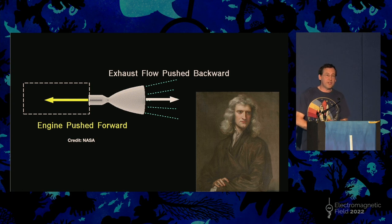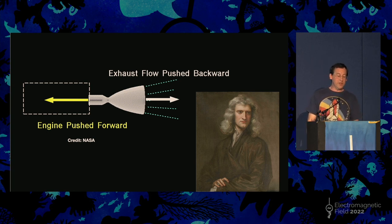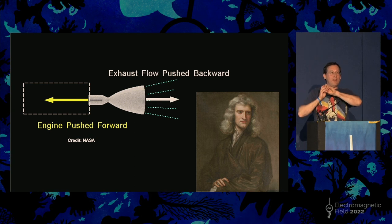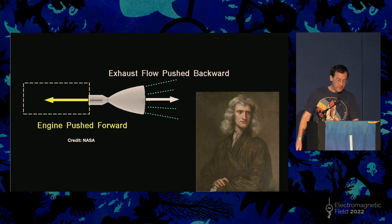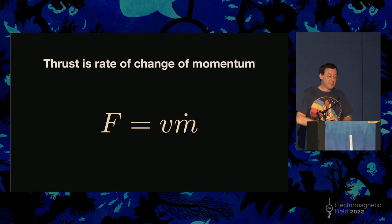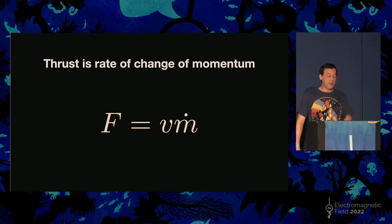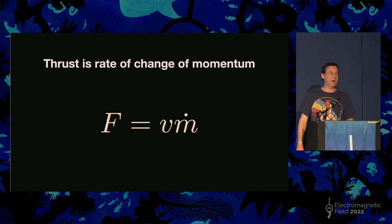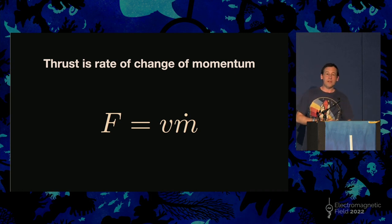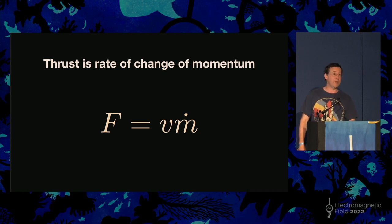A brief introduction to rockets: they basically work by ejecting stuff out the back — that's Newton's third law. You have some propellant in your rocket, you accelerate it to high speed and push it out the back, which reacts against the rocket and causes it to move in the other direction. Thrust is the rate of change of momentum: thrust equals V times M-dot, where V is how fast you're ejecting the propellant and M-dot is the mass flow rate in kilograms per second. For an efficient rocket you want a very high V and a relatively small M-dot.